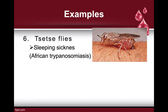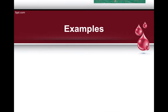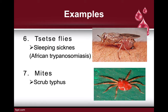Mites cause scrub typhus. The causative agent for scrub typhus is Orientia tsutsugamushi — a gram-negative bacteria. It sounds a bit like a Harry Potter spell, but that is the organism: Orientia tsutsugamushi, carried by your mites.